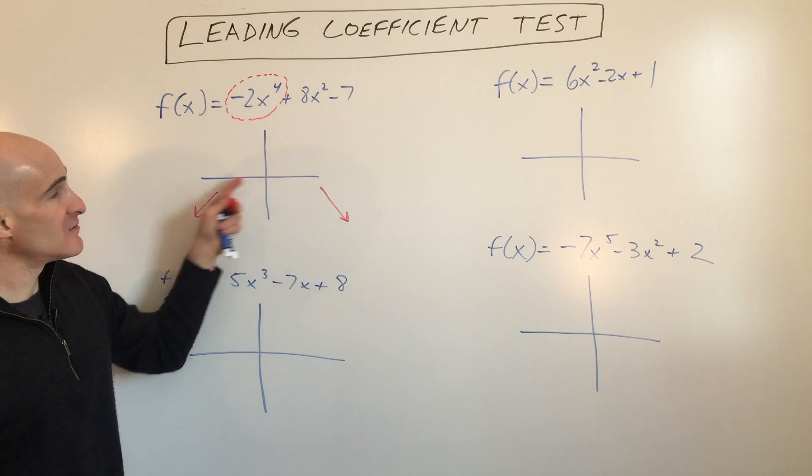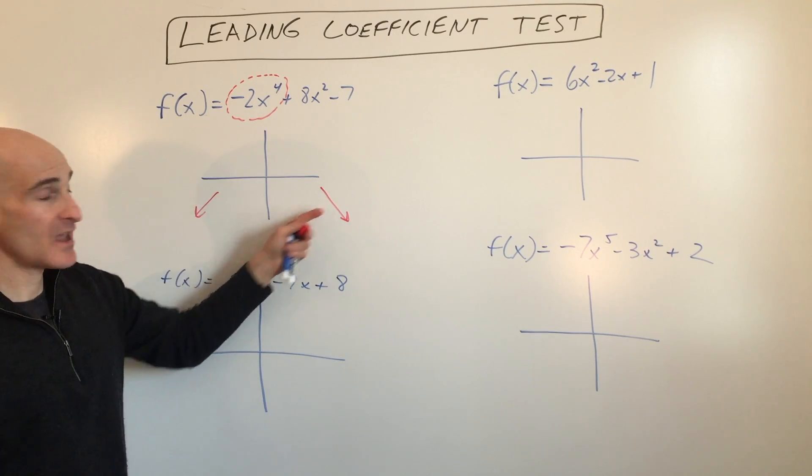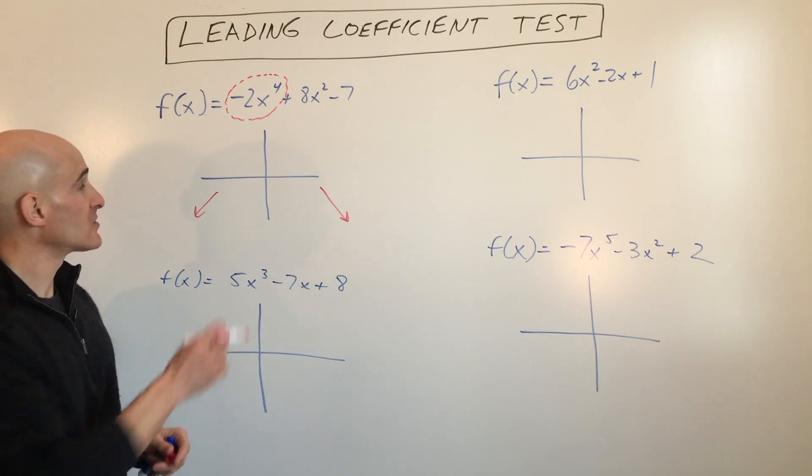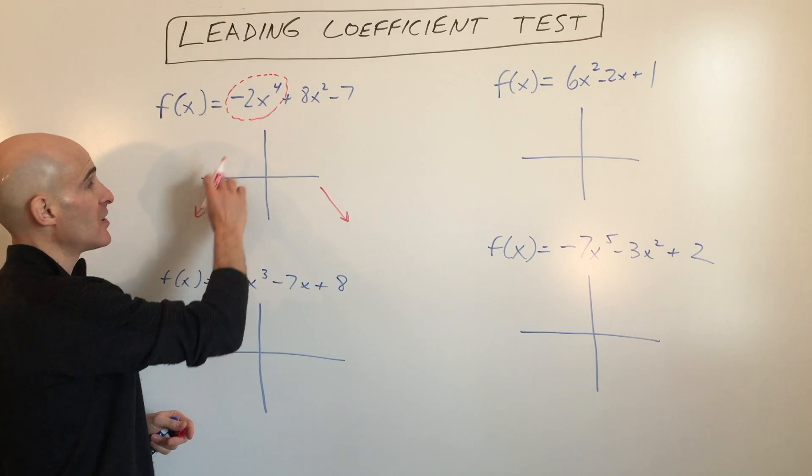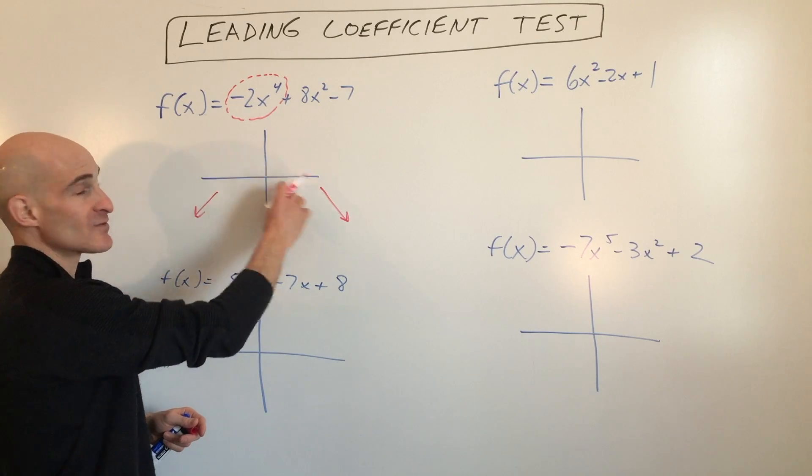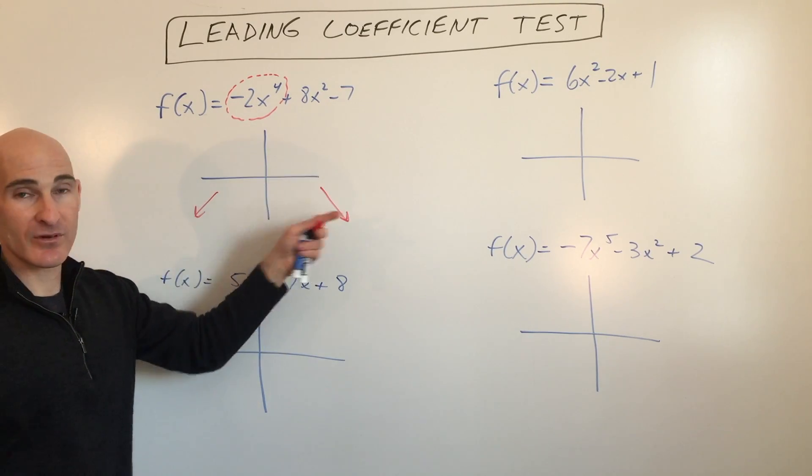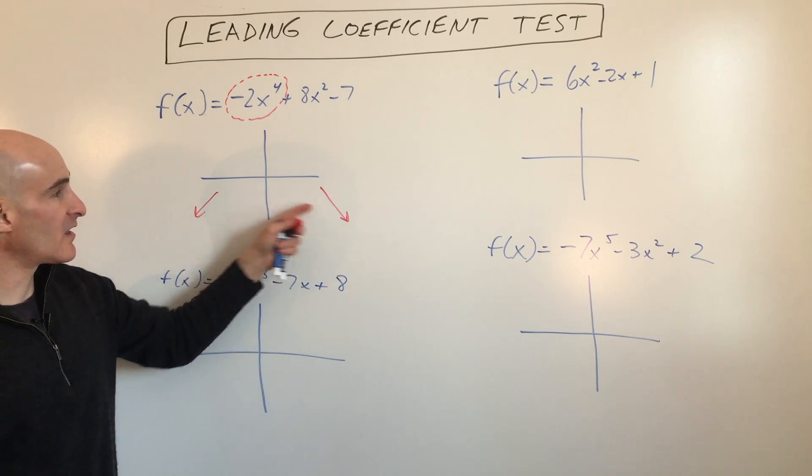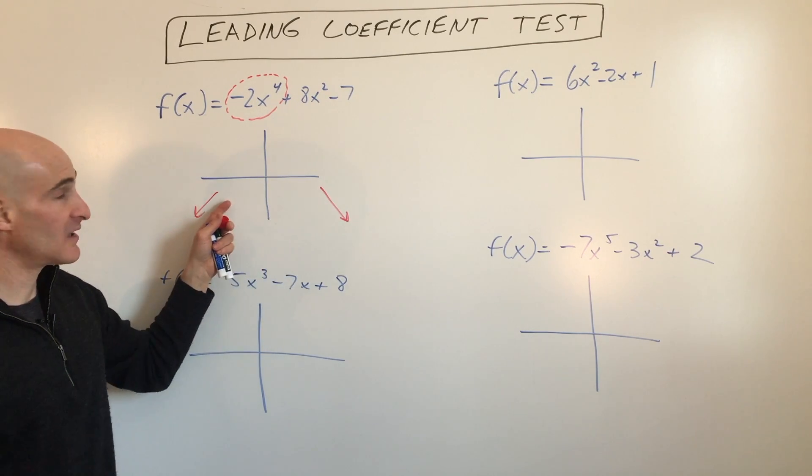Now, what happens in between these two end behaviors—that's what we talk about in another video with finding the zeros, where it crosses the x-axis. You're going to find some additional points to get a better shape for your graph. But for this video, we're just analyzing what's happening to the right and to the left.